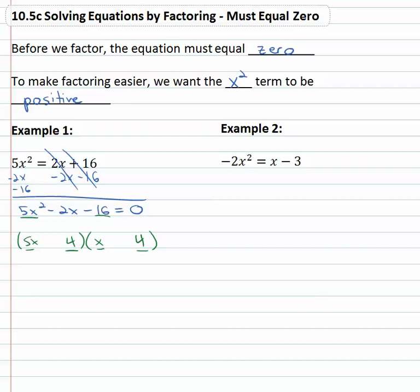So the only way to get 5x² was 5x times x. So maybe we need another way to multiply to sixteen. Maybe eight times two - sixteen is eight times two. Let's see if that works.